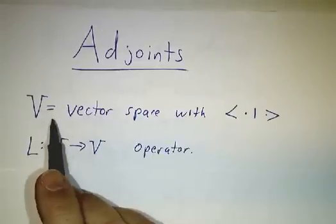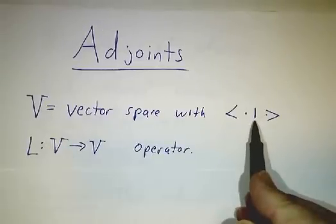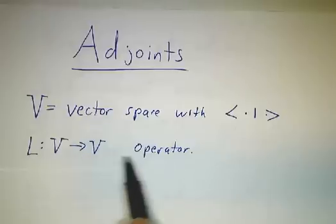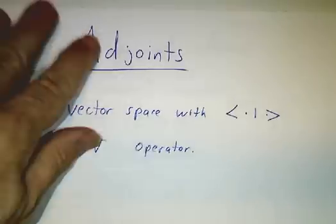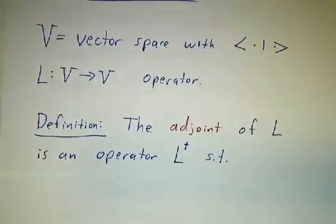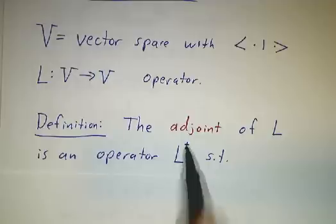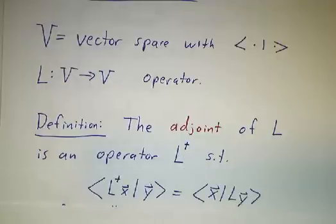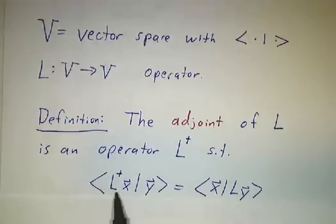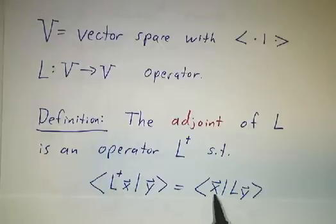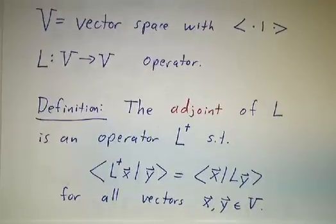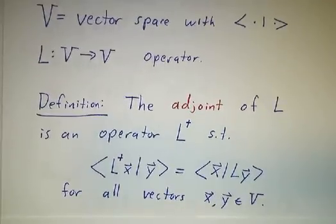Let's suppose that V is a vector space with an inner product, and we have an operator on that inner product. Then the adjoint of that operator is another operator which we denote L-dagger. The idea is that if you apply L-dagger to the left-hand factor of an inner product, it gives you the same result as applying L to the right-hand factor of the inner product. And this has to work for all vectors in our space.